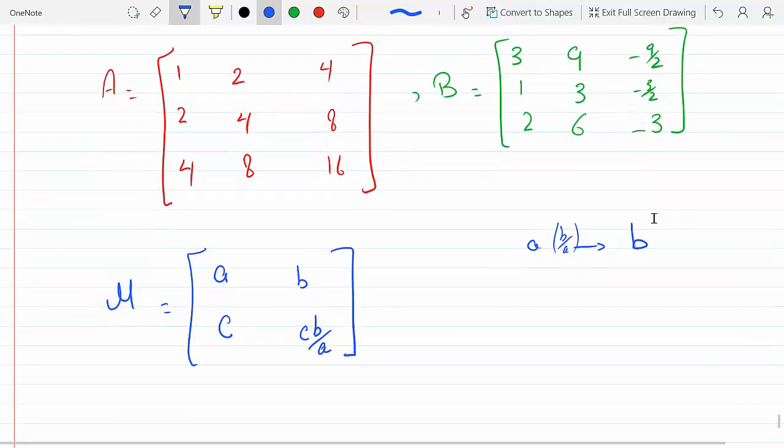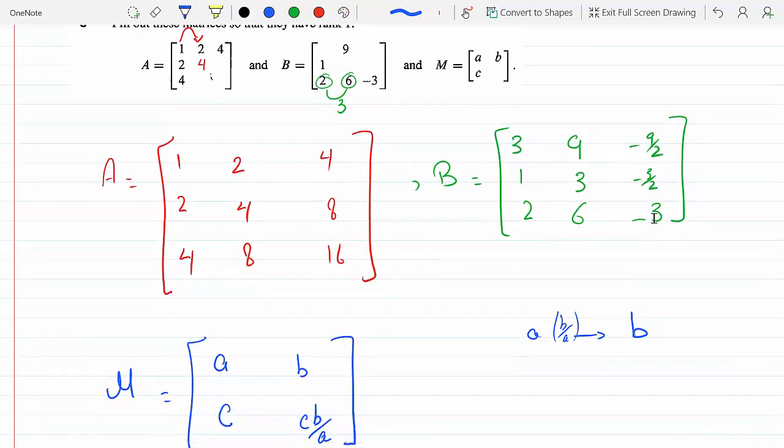So all these matrices now have a pivot of 1 because the columns are linearly dependent and there's only one pivot column.